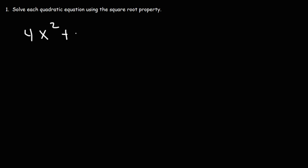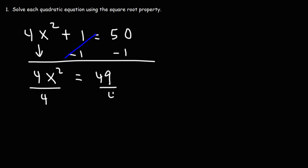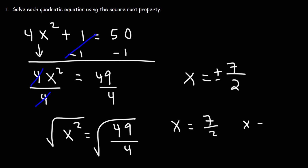Let's try this one: 4x squared plus 1 is equal to 50. The first thing I recommend doing is subtracting 1 from both sides, so we have 4x squared is equal to 49. Next, we divide both sides by 4, leaving x squared equal to 49 over 4. After that, we take the square root of both sides: the square root of 49 is 7, and the square root of 4 is 2. So x can equal positive 7 over 2 or negative 7 over 2.